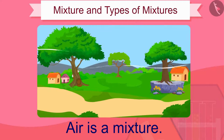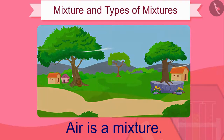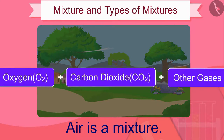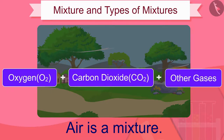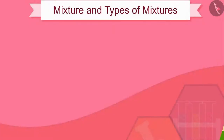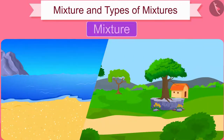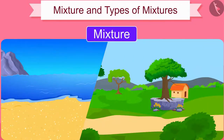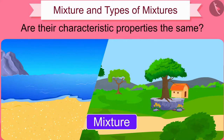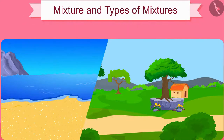For example, air is a mixture because it is made by mixing different types of pure substances and compounds such as oxygen, carbon dioxide, etc. Sea water and air are both mixtures, but are their characteristic properties the same? Of course not.